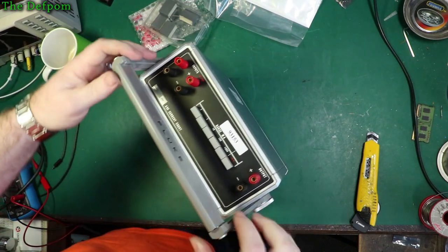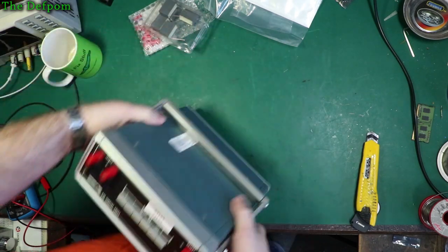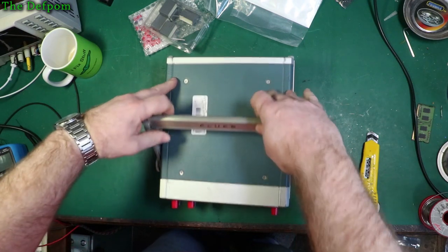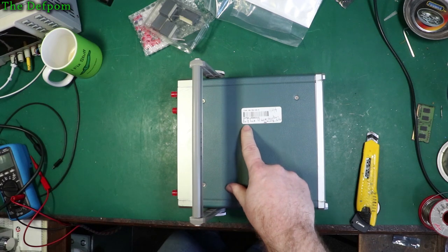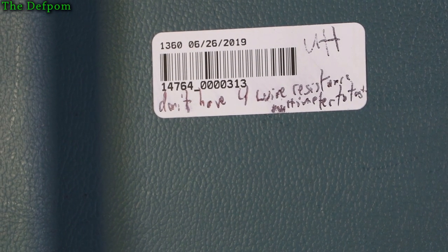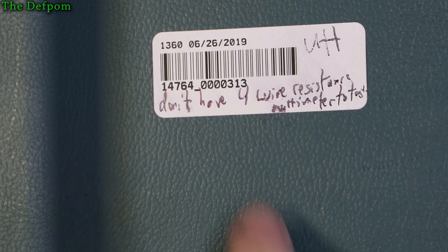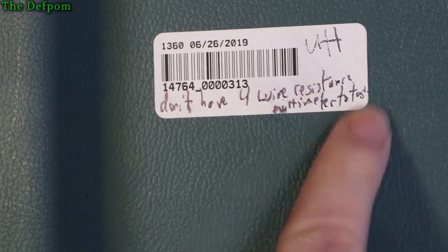Right, this is what we've got. It seems to be kind of intact. What's this say? I don't know. I'm really bad at reading handwriting. Well, even my own writing. Don't have four wire resistors something to test. Can't read it.